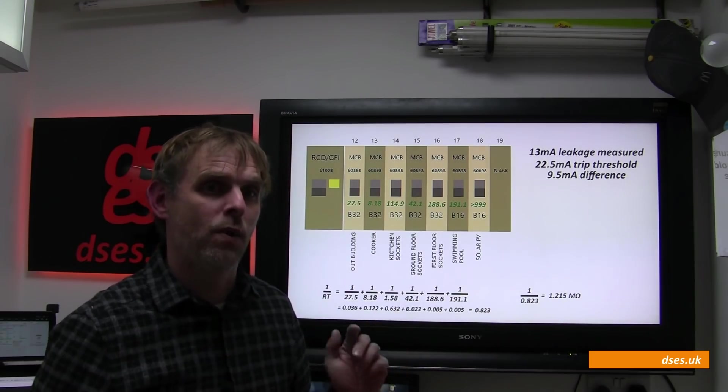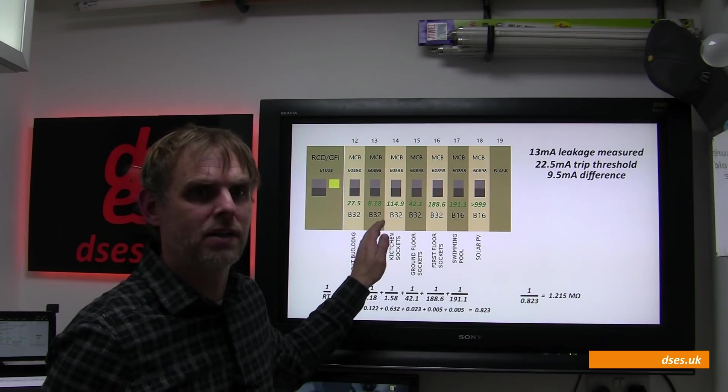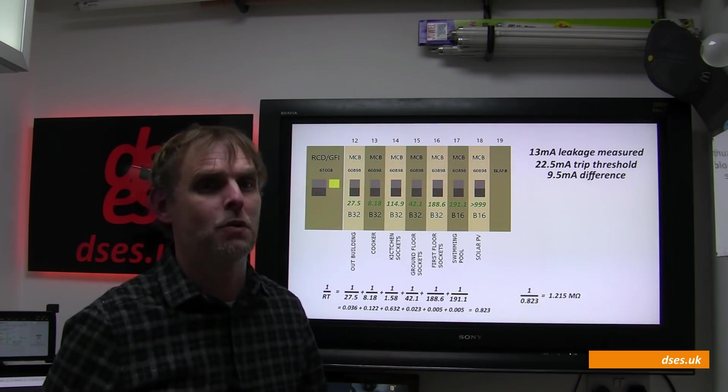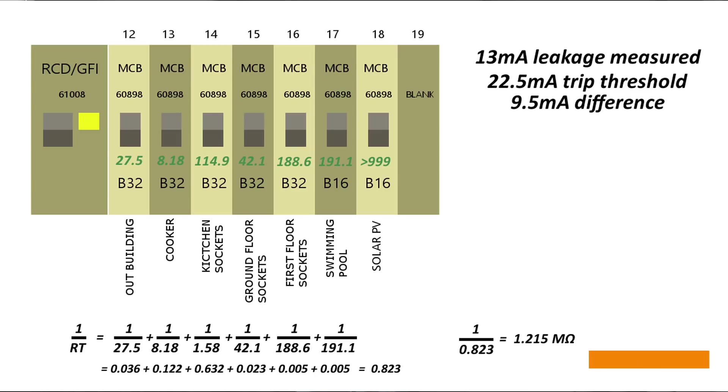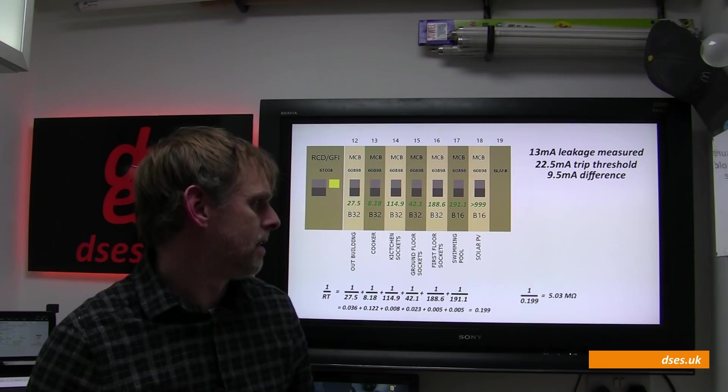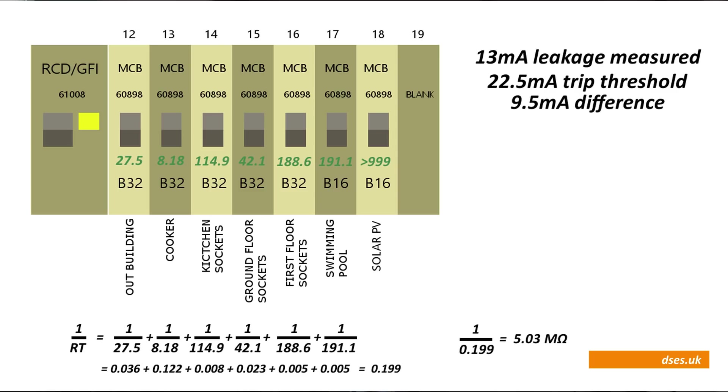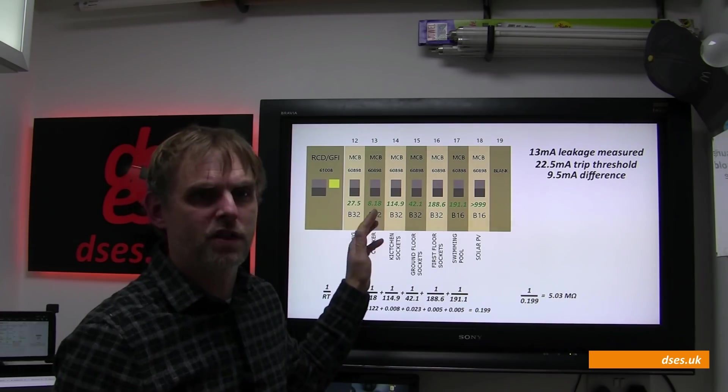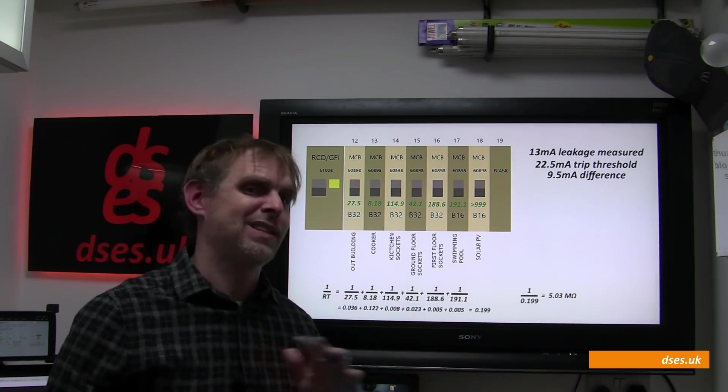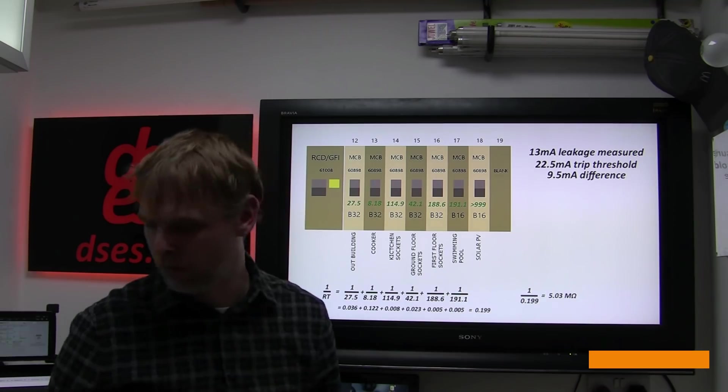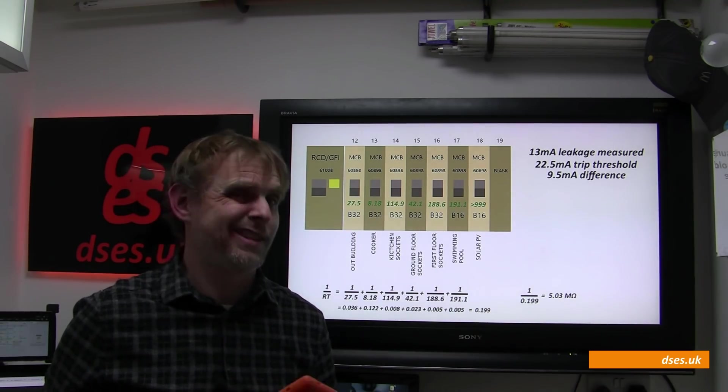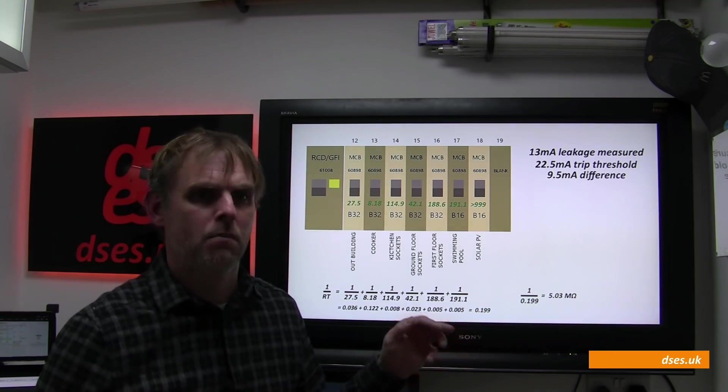Looking at the numbers now, we know our resultant IR will still be less than 8.18 on circuit two, as that's our next lowest value. But let's change our calculation and see what we have. So 114.9 goes in place of the 1.58 from before. The reciprocal of that is a nice low 0.008. Add them up and we get 0.199. If we take the reciprocal of that, we get 5.03 megaohms. Less than the 8.18 megaohm figure of circuit two, as we expected, and still not a fantastic value, but much higher than the pass limit of 1 or the comfort limit of 2 megaohms. We shouldn't see any nuisance tripping with this kind of value.